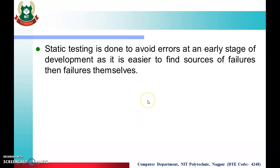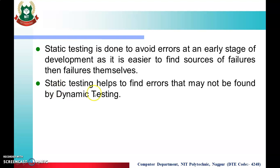Static testing is done to avoid errors at an early stage of development, as it is easier to find the source of failure. Why do we perform static testing? We find out errors at the early stage — when the software is being created — so our software becomes a quality software. During development, if we find errors, we can fix them early. Static testing also helps to find errors that may not be found by dynamic testing.